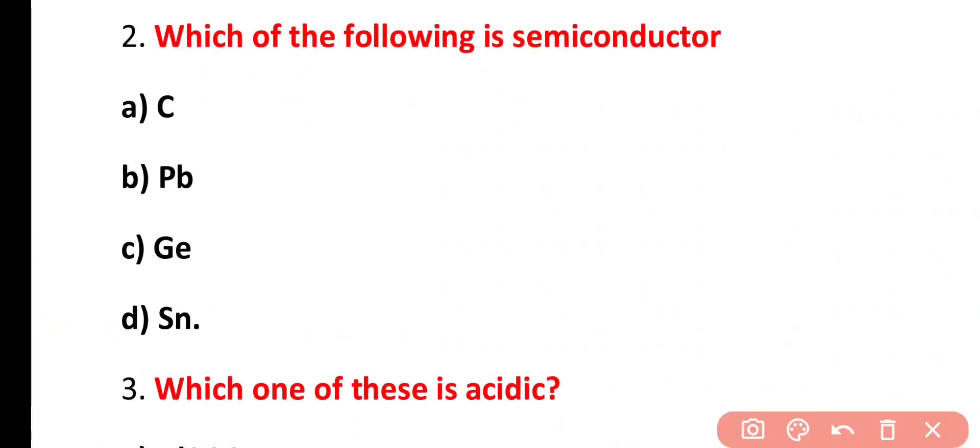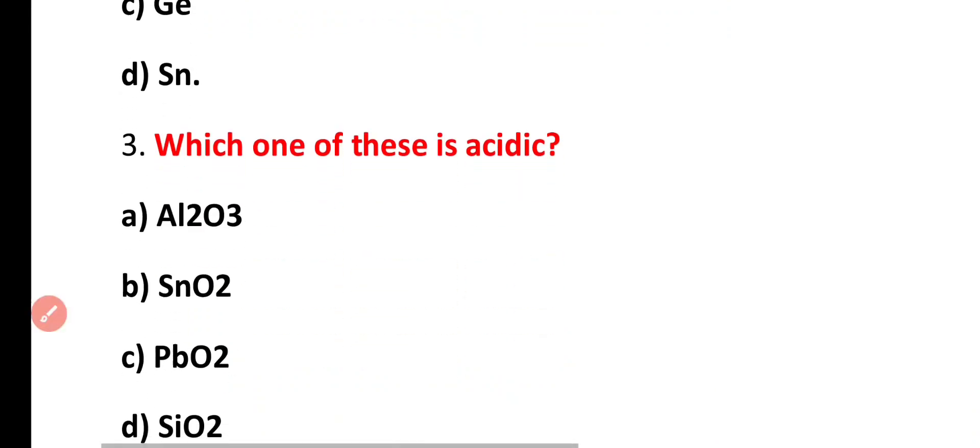Question number 2. Which of the following is semiconductor? Carbon, lead, germanium, or tin? Correct answer is option C. Germanium belongs to group 4A of periodic table and it is semiconductor. Along with germanium, silicon is also semiconductor.